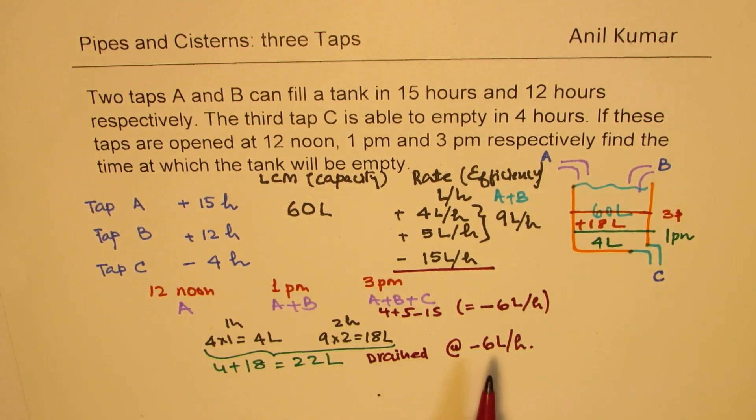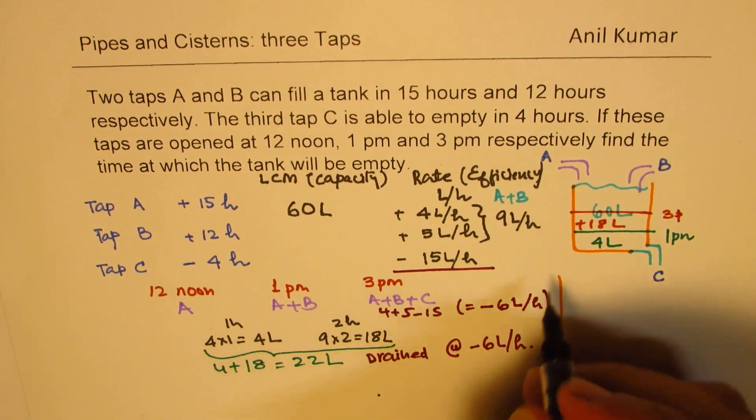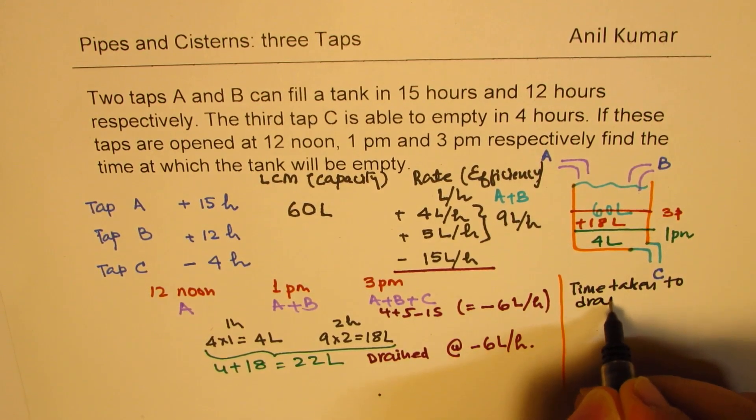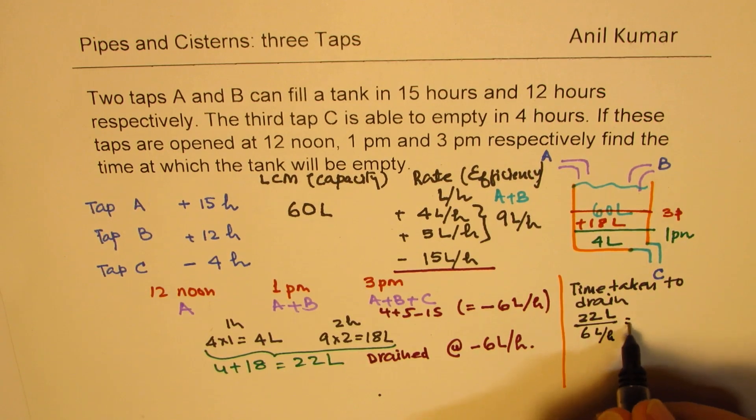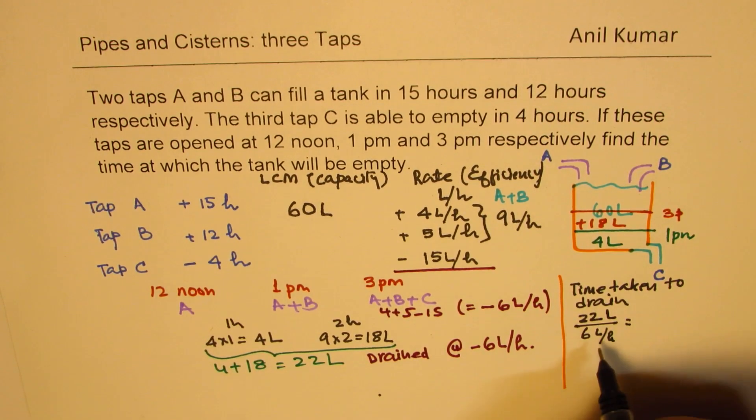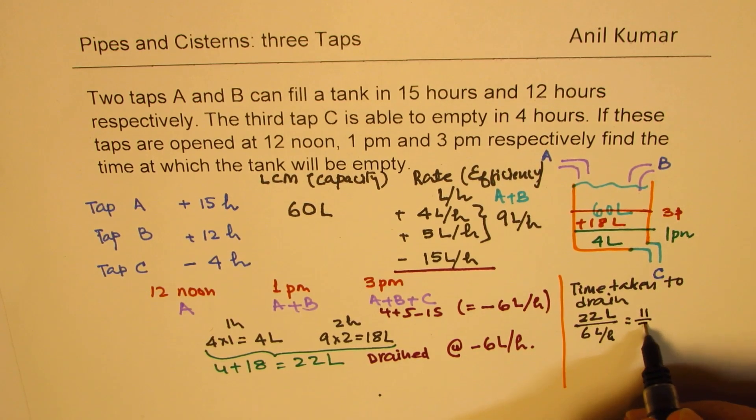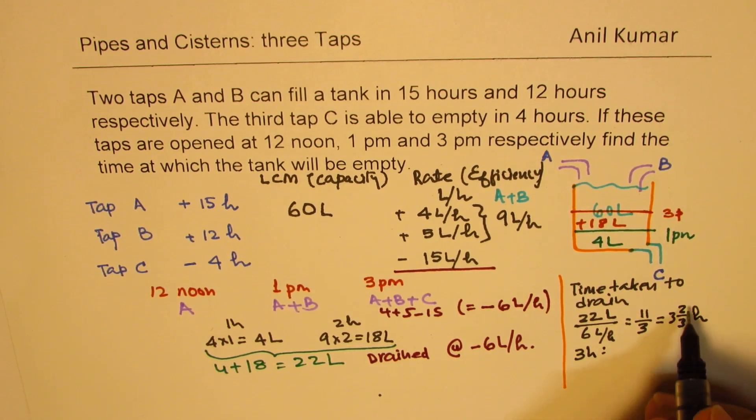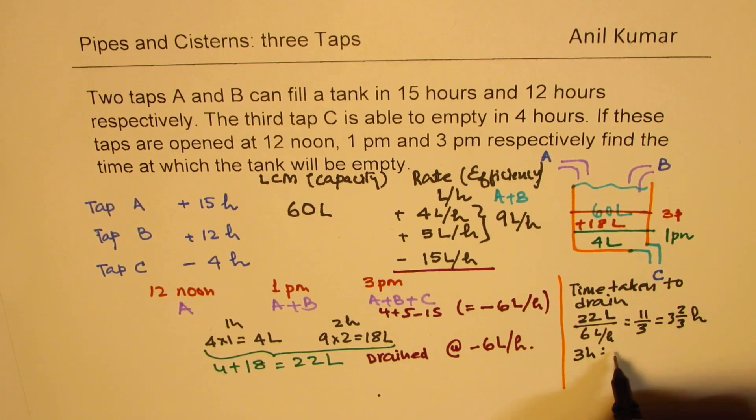So how much time will that take? Let's figure this out. So time taken to drain will be, we have 22 liters, so we'll divide 22 liters by 6 liters per hour. So we can divide 11 by 3, which is 3 times 3 is 9, 9 and 2 over 3 hours. Or we get 3 hours and 2 by 3 is 60 divided by 3 is 20 times 2 is 40, 40 minutes. So 3 hours, 40 minutes.